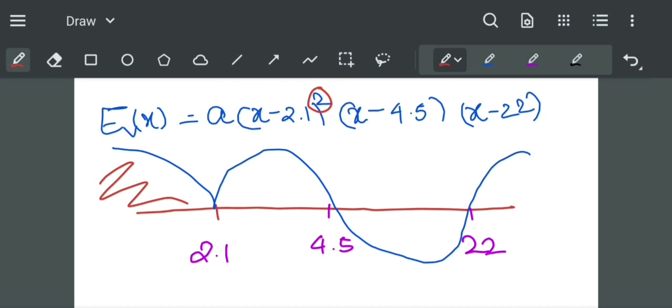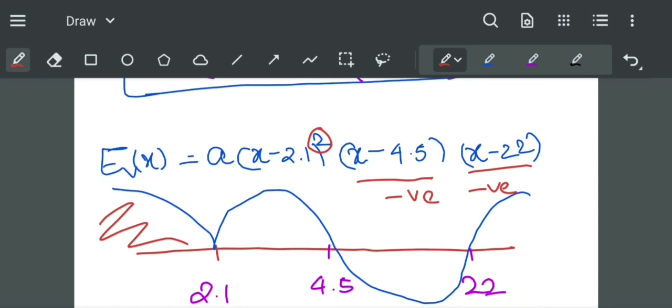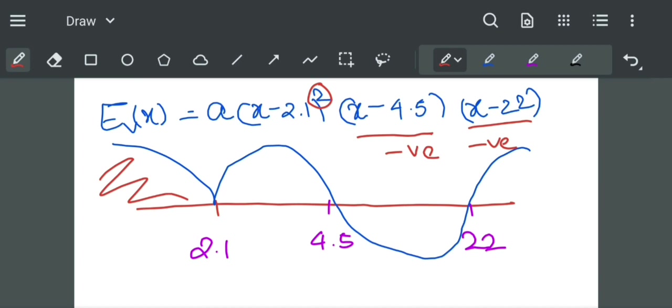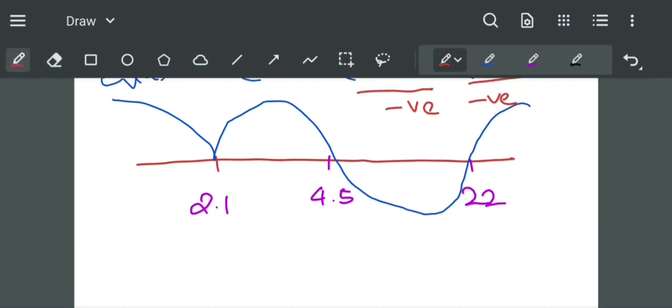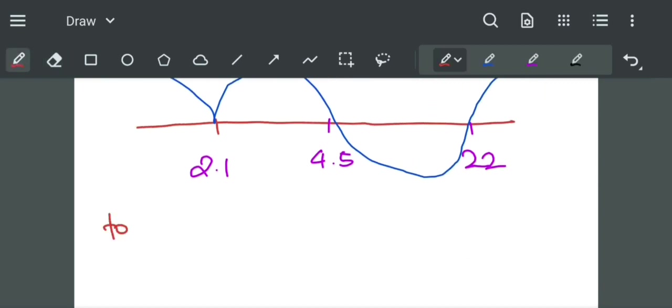Let us take any value less than 2.1, say 2, which makes (2 minus 4.5) negative and (2 minus 22) also negative. Both products give positive, and (2 minus 2.1) squared will also give positive. So any value less than 2.1 will also give a positive outcome.